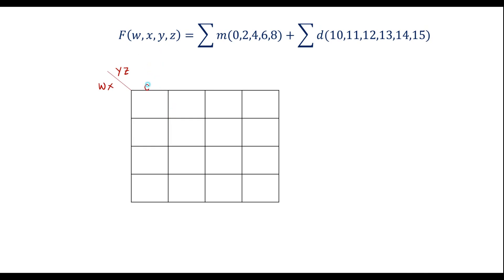The kmap columns are labeled: 00, 01, 10, 11 for y,z and the rows similarly for w,x, giving us the standard Gray code ordering: 00, 01, 11, 10.